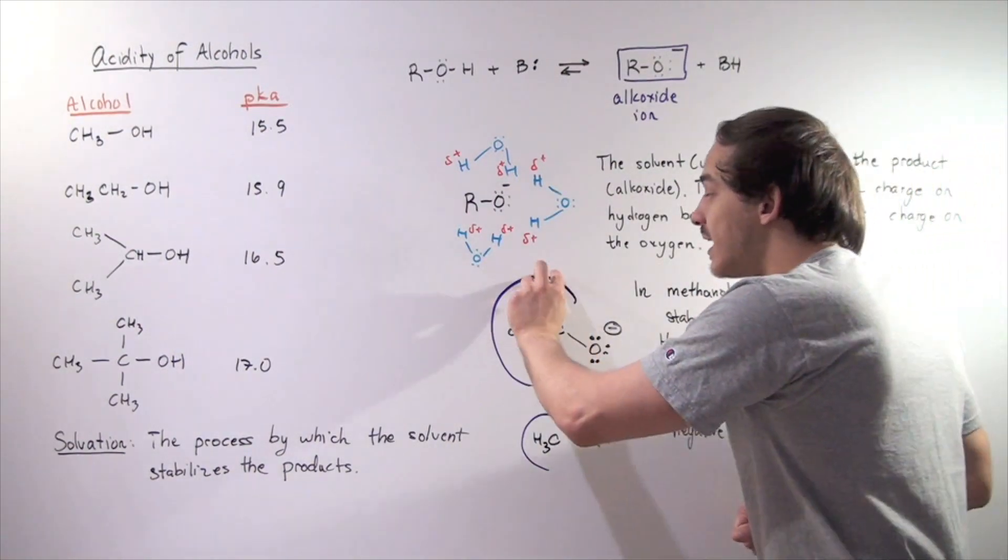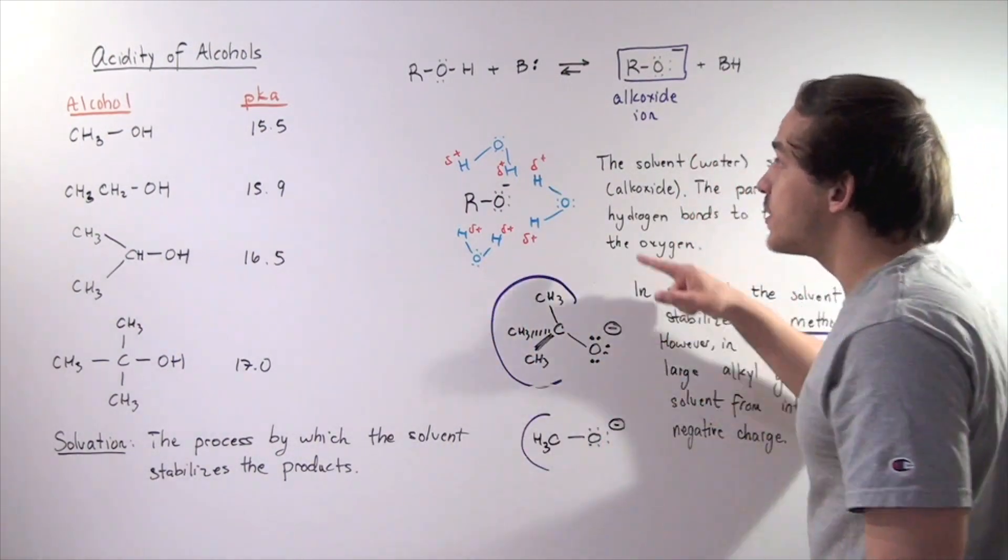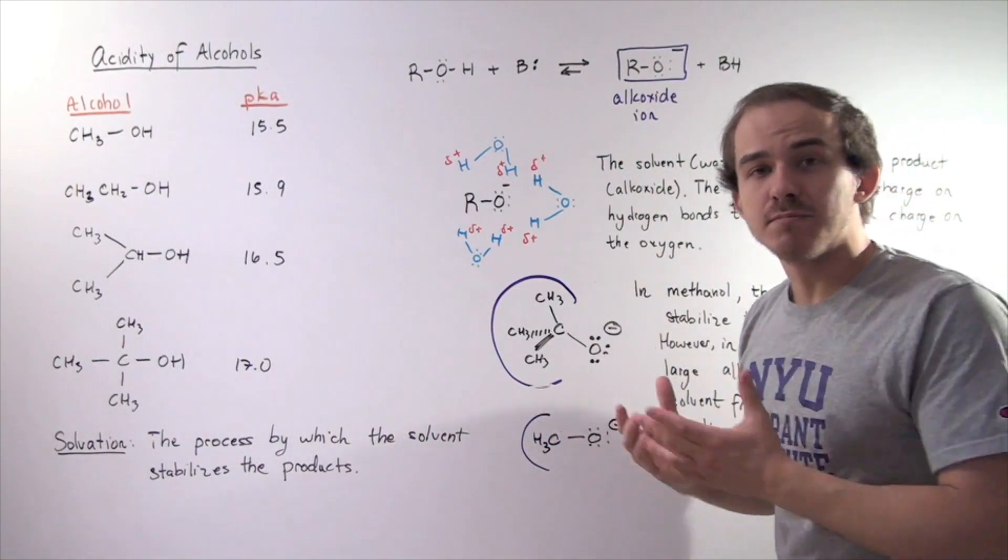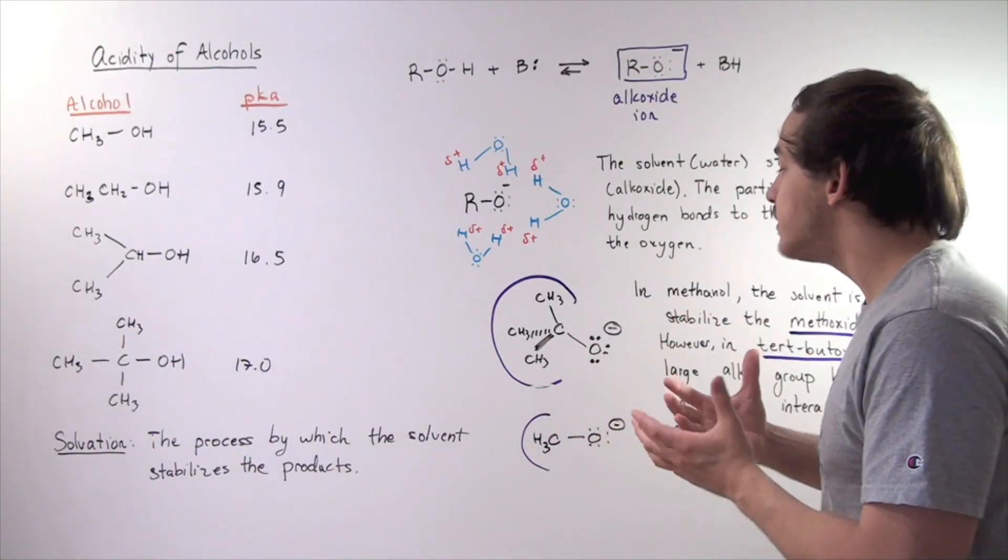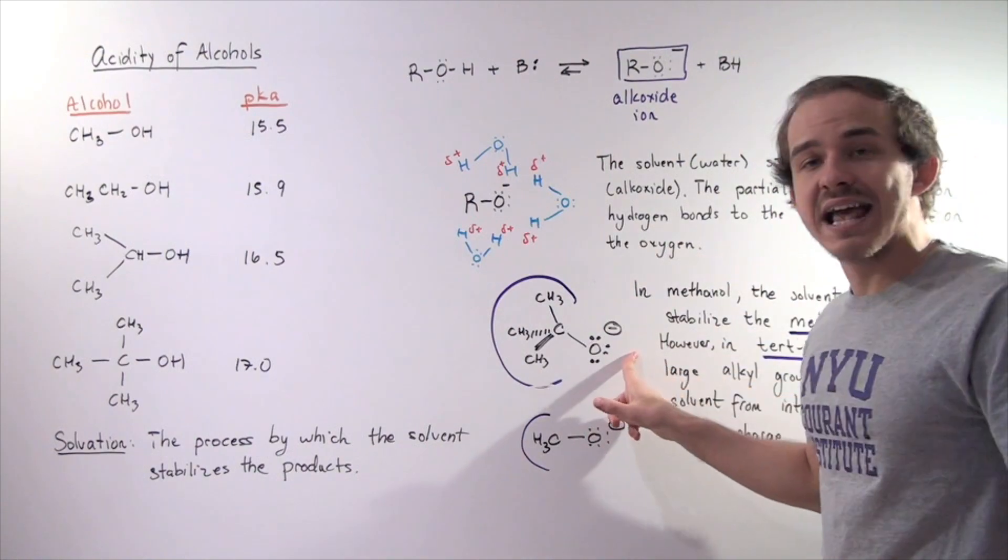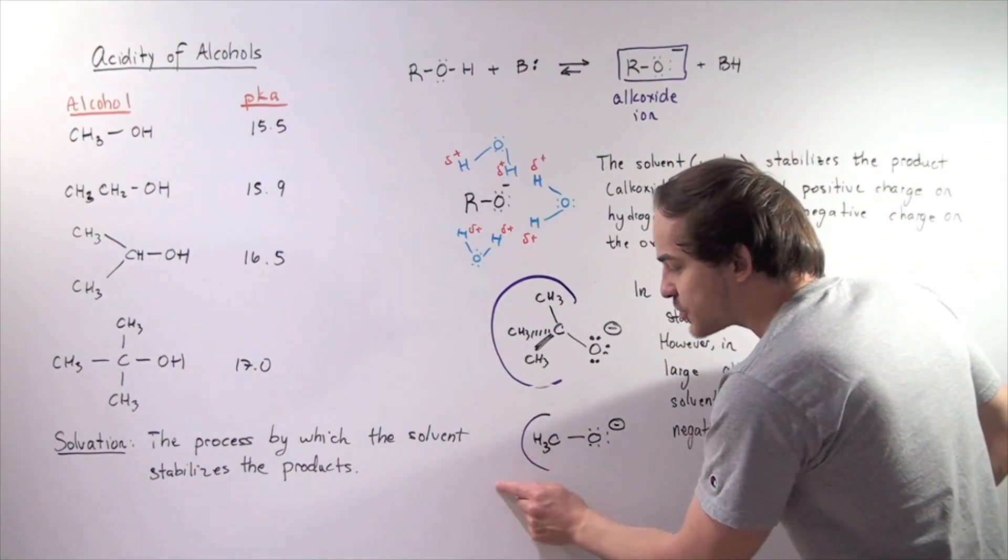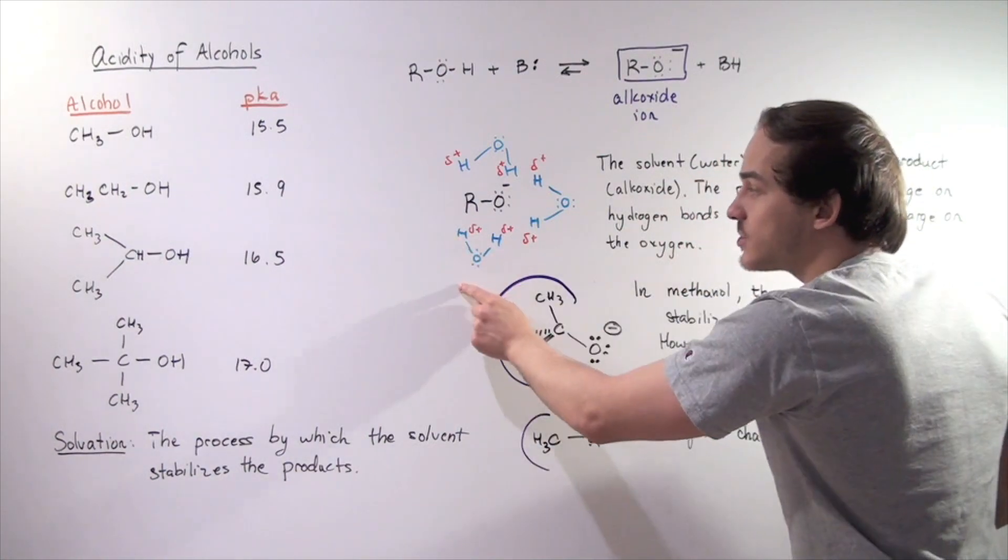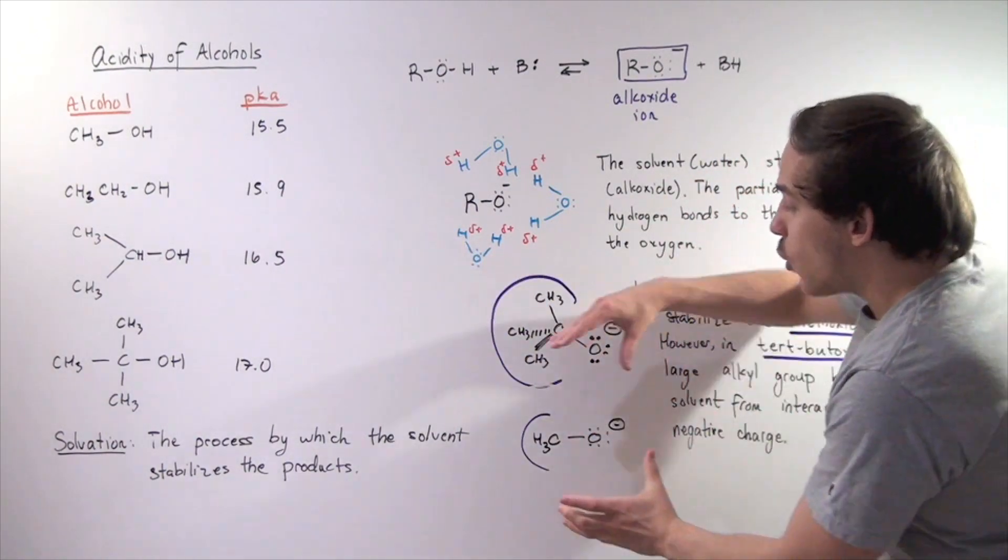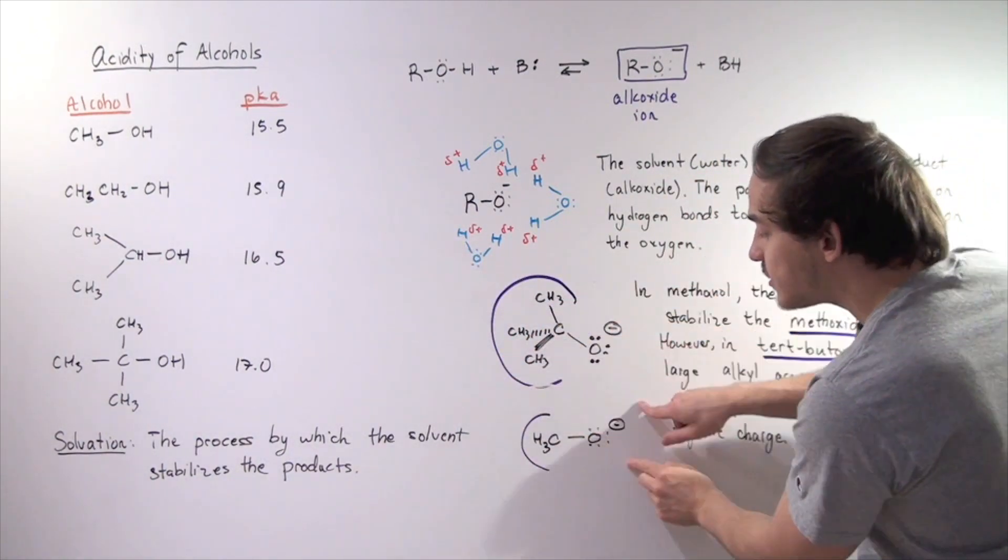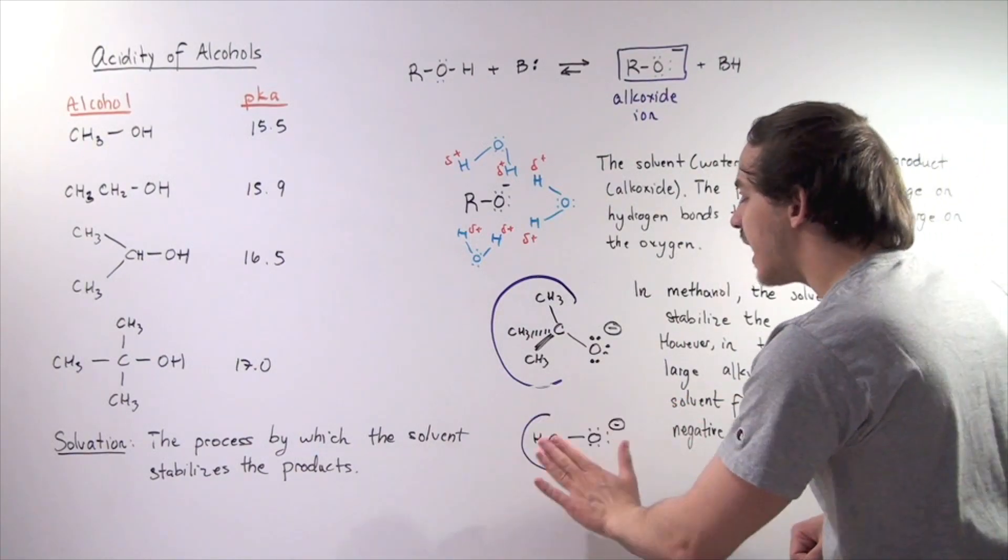Why? Well, because of this large group, the water molecules, the solvent molecules, will not be able to arrange themselves around this negative charge. While in this group, because this is a small group, the water molecules will be able to surround the oxygen molecule and stabilize it.